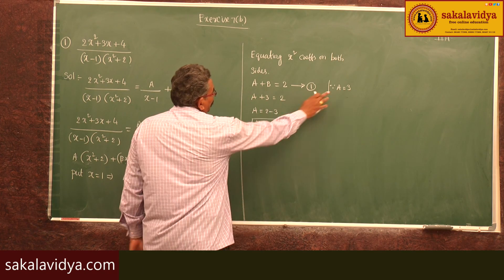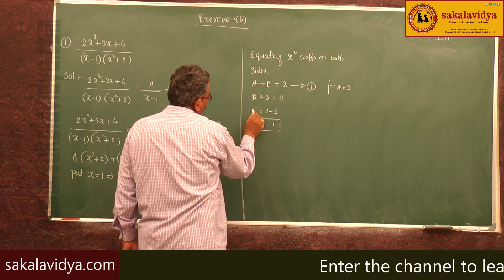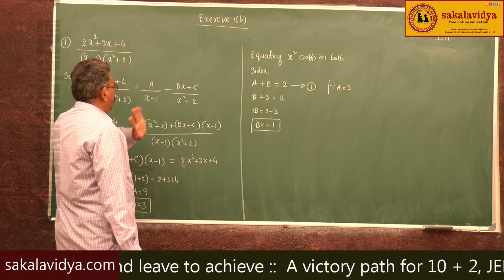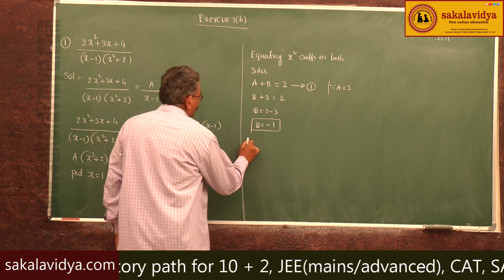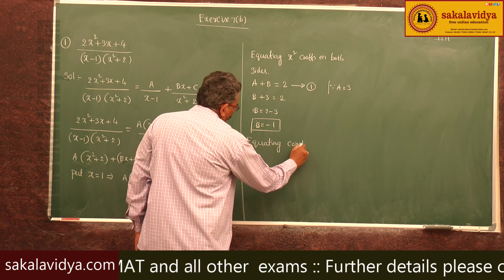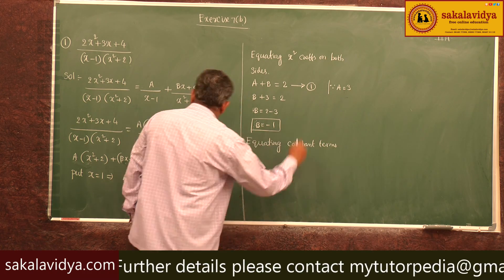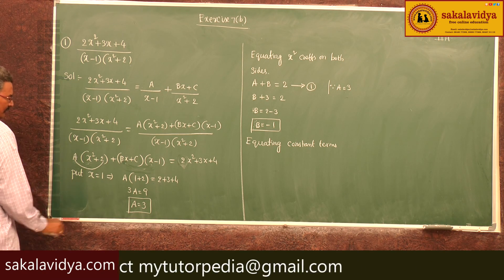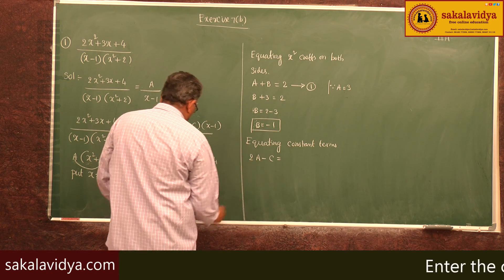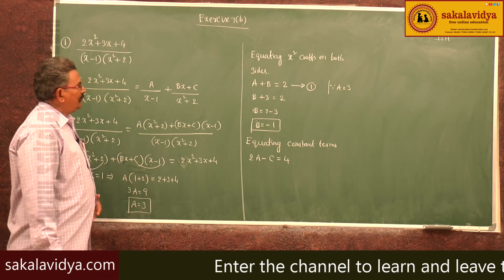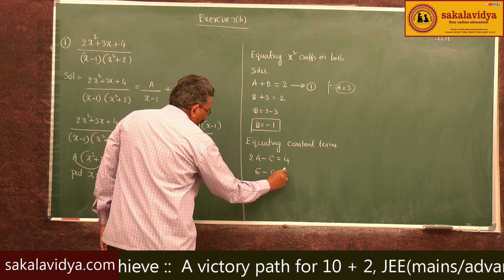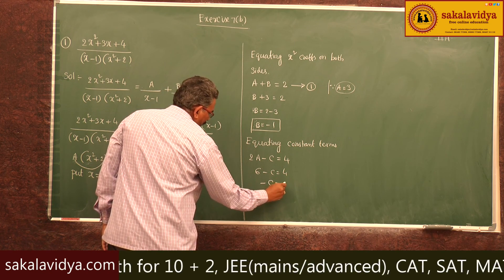Correcting: A = 3 and B = -1. Now we know A and B; only C remains to find. Equating constant terms: the constants give 2A - C = 4. Substituting A = 3: 6 - C = 4, so C = 2.